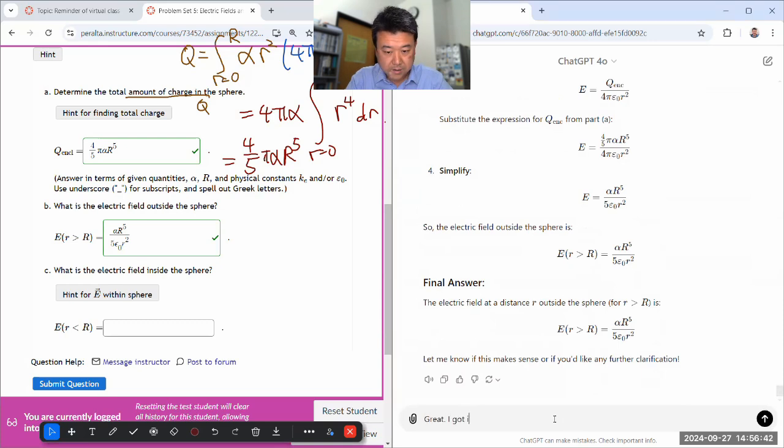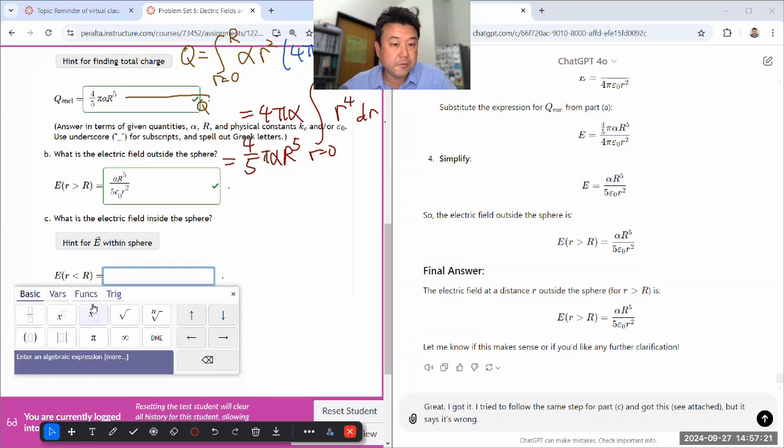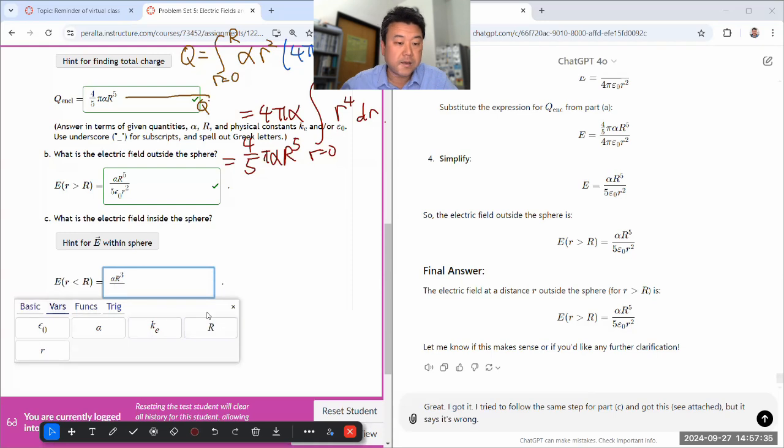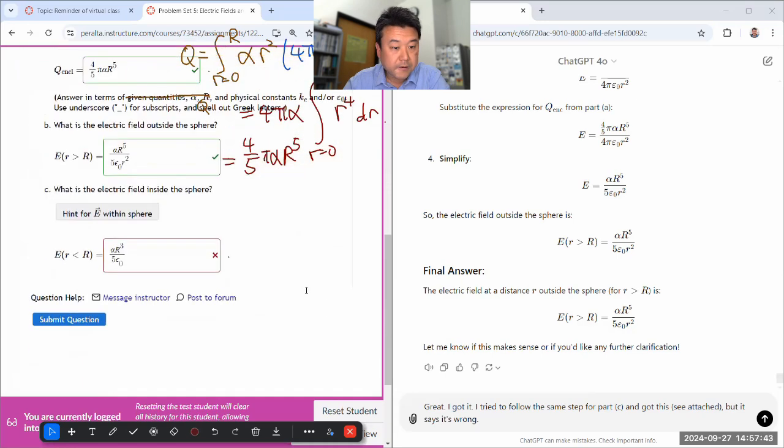I tried to follow the same step for part C. And got this, see attached. But it says it's wrong. And let me make the mistake that's easy to make. Or one that I think can plausibly be made. I'll do alpha times, and I'll just replace the lowercase r with the uppercase R. That'll give me r cubed. Divide by 5 epsilon naught. And that'll be wrong.